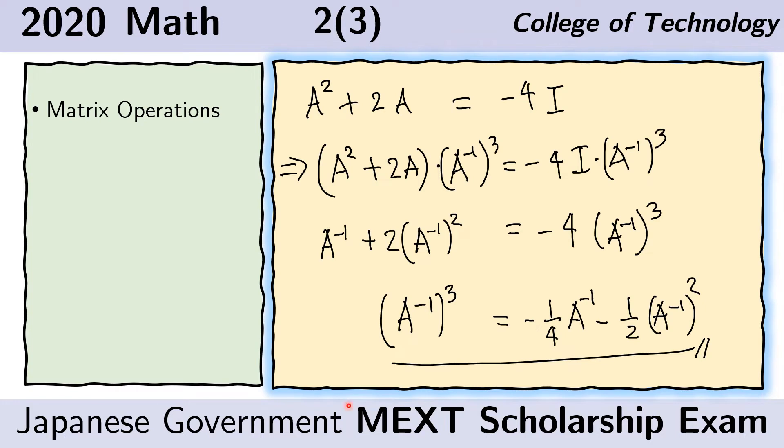We begin with a given relationship. The first step we can do is to multiply on the right the expression, the cube of the matrix inverse. So if we do that here and do that here, we notice that on the right side we just get negative 4 times the cube of the matrix inverse.